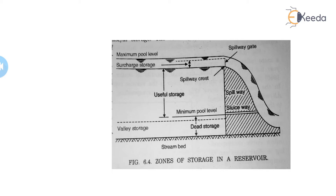Next is the surcharge storage — the volume of water stored between the normal pool level and the maximum pool level. The excess volume of water stored between these two levels is known as surcharge storage. It is usually uncontrolled because this storage zone is only available during a flood situation, and flood water is obviously not controlled.